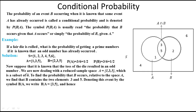Now suppose it is known that the toss of the die resulted in an odd number. This means event A has already occurred. We are now dealing with a reduced sample space A = {1, 3, 5}, which is a subset of S. To find the probability of B relative to this reduced sample space, we find that B contains two elements: three and five. Denoting this event by B given A, we write P(B|A) = 2/3.